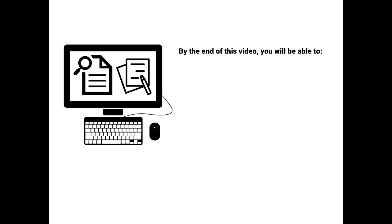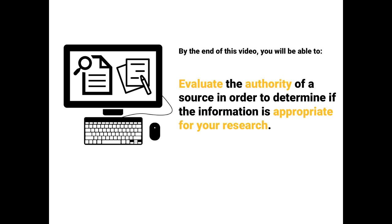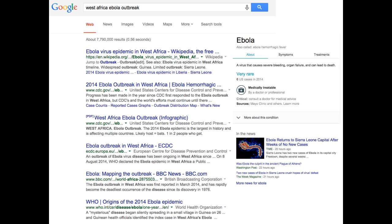By the end of this video, you will be able to evaluate the authority of a source in order to determine if the information is appropriate for your research. When we encounter information online, we can't always tell who the author is. Search results look similar and authority is often hard to determine.